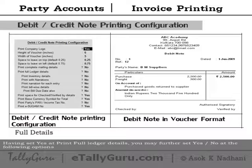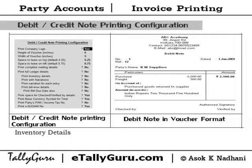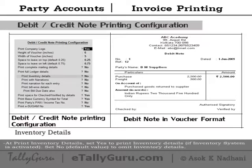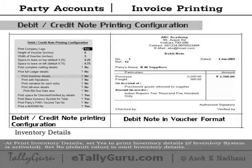For inventory details, at 'Print inventory details' set yes to print inventory details if the inventory details system is activated, or set no by default to omit inventory details.